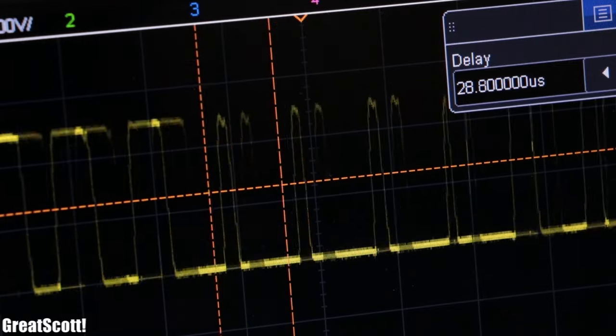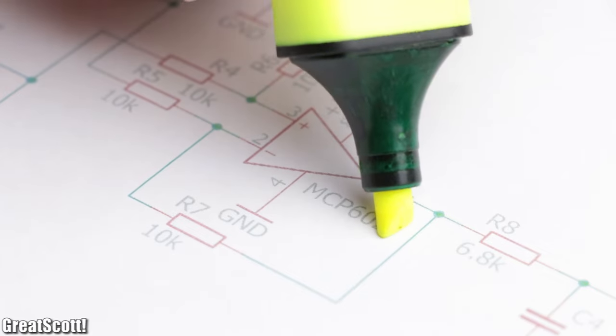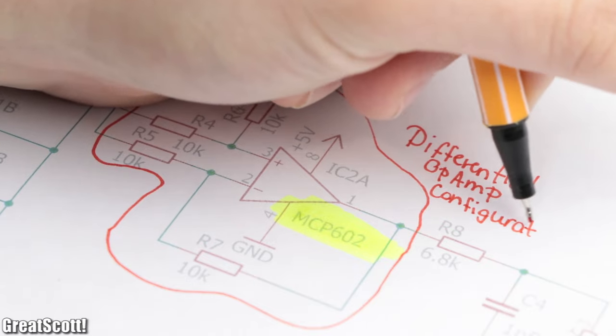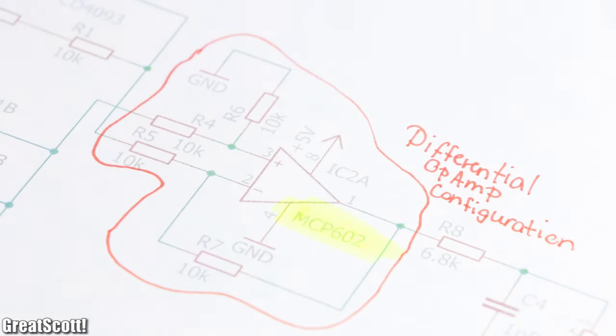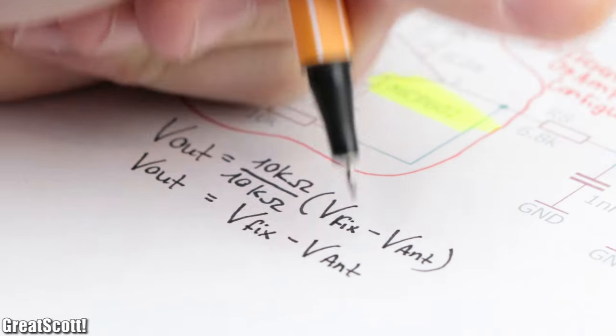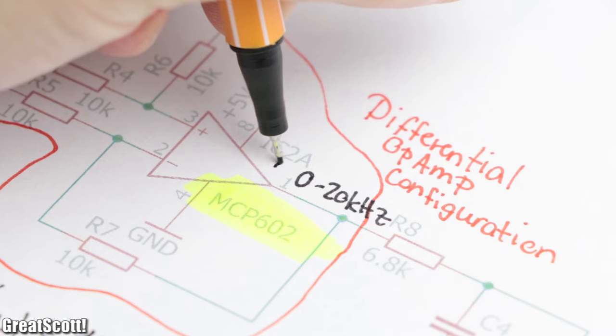But since we only care about the difference, I rather remove this IC entirely and replace it with an MCP602 op-amp in a differential op-amp configuration. This way the antenna oscillation gets subtracted from the fixed oscillation and we should get our somewhat hearable frequency on the output.